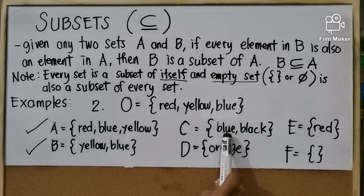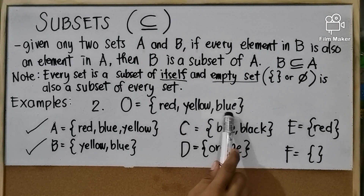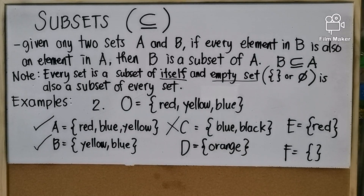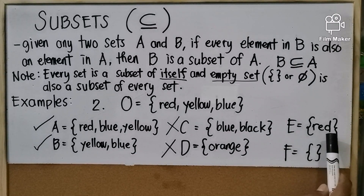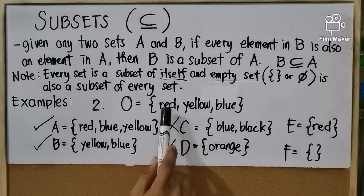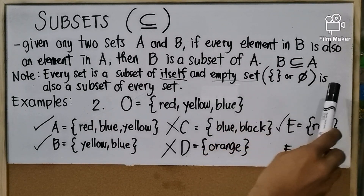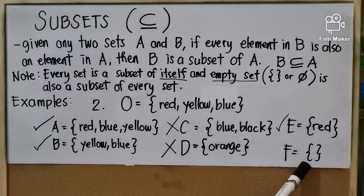Set C contains blue and black. Blue is found in set O, but black is not — so C is not a subset of O. Set D contains orange; orange is not found in set O, so set D is not a subset of O. Set E equals {red}; red is found in set O, so E is a subset of O. Set F is the empty set — as we know, the empty set is a subset of every set, so it is automatically a subset of any set.